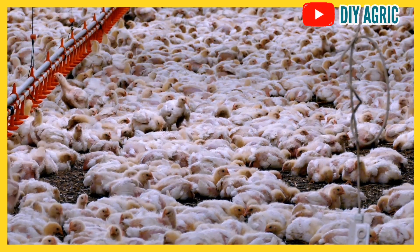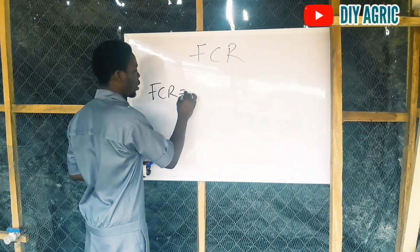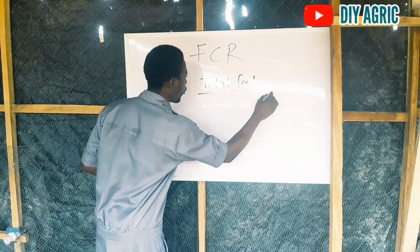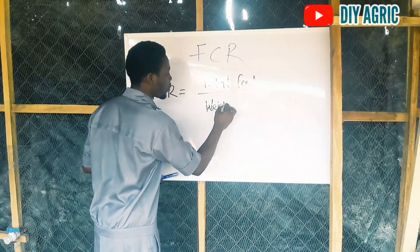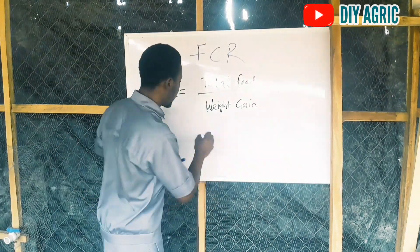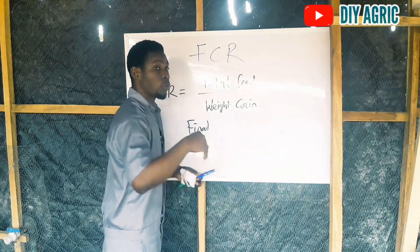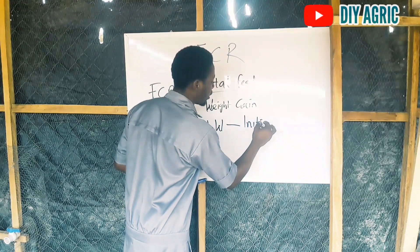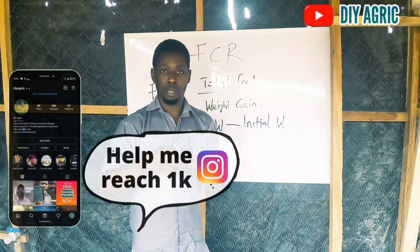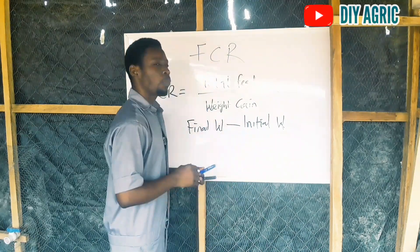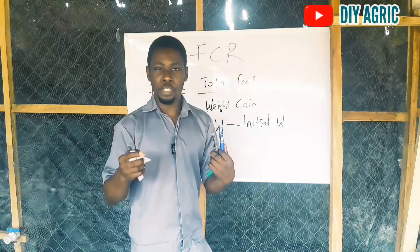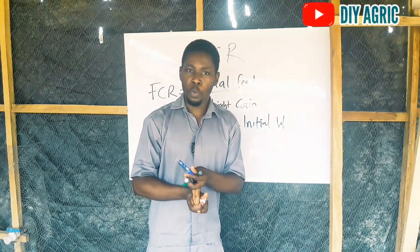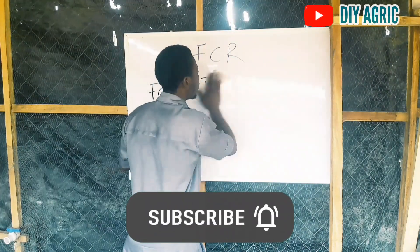The simple way to calculate your FCR is with this formula: FCR = Total Feed Used ÷ Weight Gain. Your weight gain is your final weight — when you are ready to sell — minus the initial weight, which is the weight of the birds when they came in from the hatchery. That is the simple way to calculate your FCR, and there are key things you need to know about it.